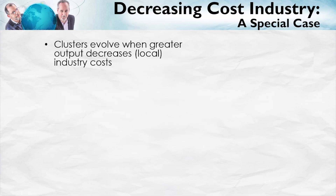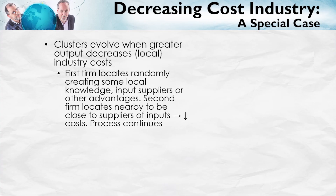Clusters evolve when greater output decreases local industry costs. The best way to explain this is to give a stylized history, which fits the facts for many of these clusters, such as the one in Dalton, Georgia. The idea is that the first firm locates more or less randomly. However, the first firm creates some local knowledge — in the case of Dalton, Georgia, it was knowledge about how to produce carpets, and it began to train workers in specialized techniques.